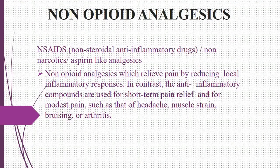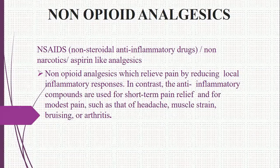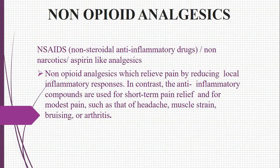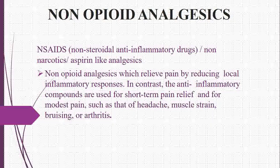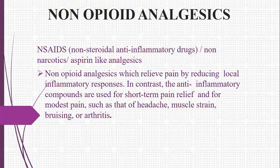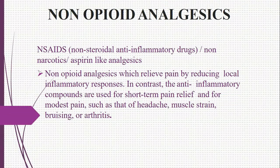The second major category is non-opioid analgesics — also called non-steroidal anti-inflammatory drugs (NSAIDs) or non-narcotic aspirin-like analgesics. Aspirin is the classical example. Non-opioid analgesics relieve pain by reducing the local inflammatory response but do not cause or produce sleep. These anti-inflammatory compounds are used for short-term pain relief for modest pain.